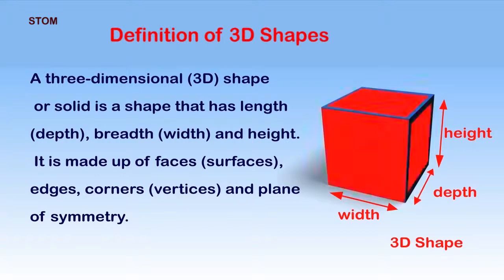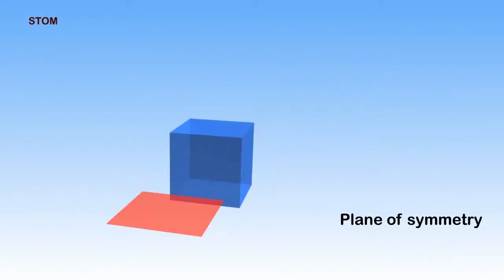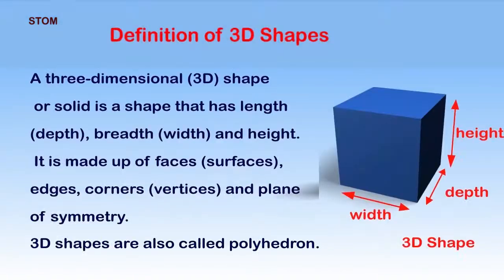It is made up of faces, which are also referred to as surfaces as highlighted in the diagram on the screen. It has edges, it has corners which are also known as vertices, and also has a plane of symmetry which divides the shape into two identical halves.